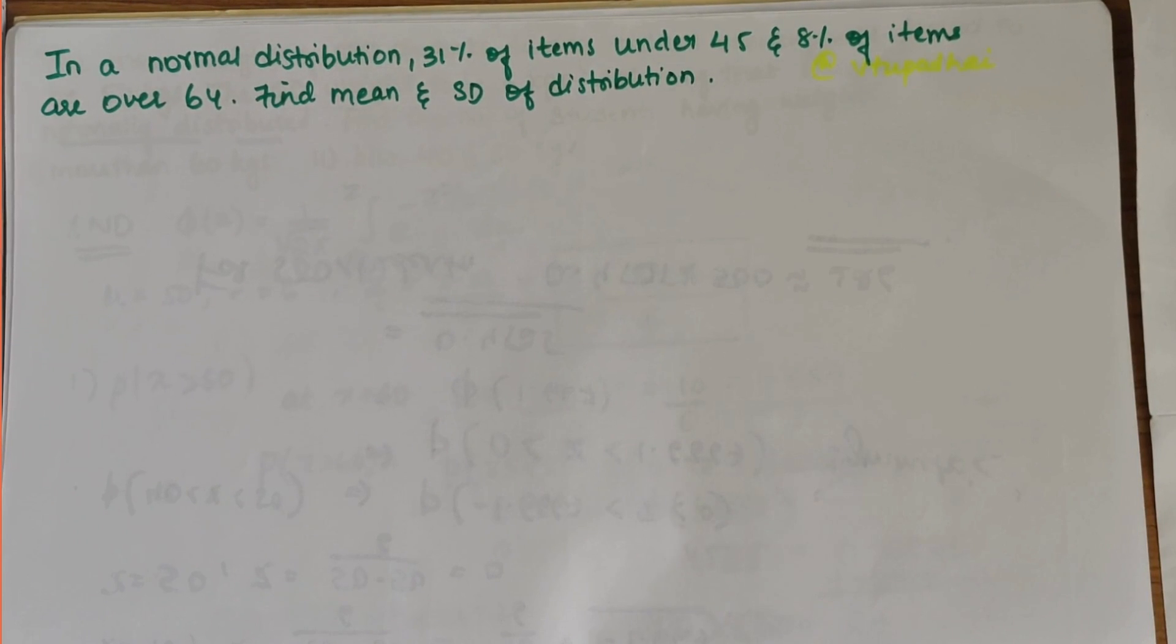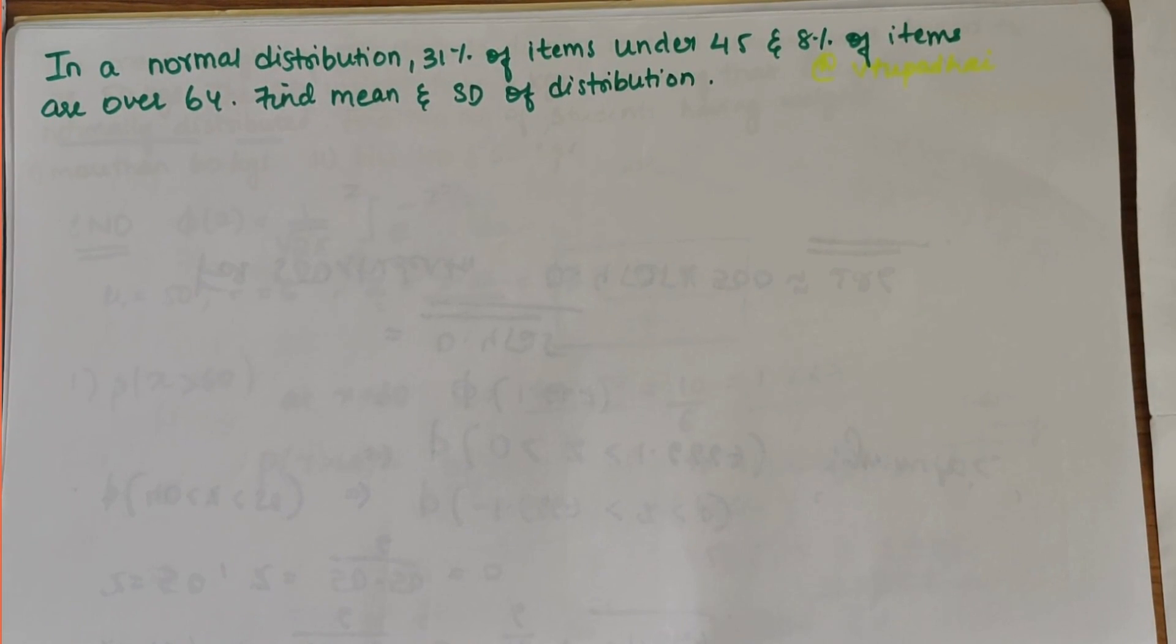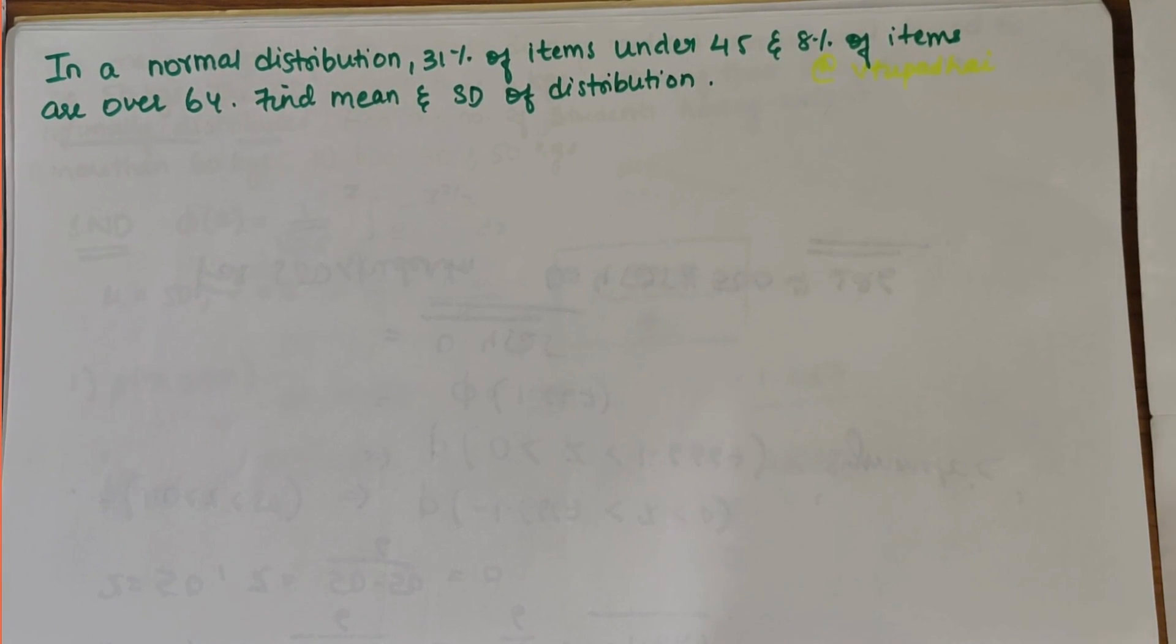In this video we'll be solving a numerical related to normal distribution. The problem statement says that in a normal distribution, 31% of items are under 45 and 8% of items are over 64, so we have to find the mean and standard deviation of distribution.